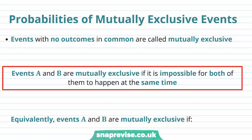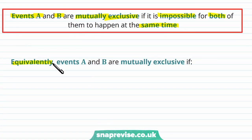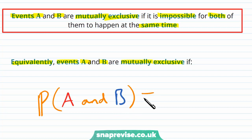So how can we calculate the probabilities of Mutually Exclusive Events? Events with no outcomes in common are called Mutually Exclusive. Events A and B are Mutually Exclusive if it is impossible for both of them to occur at the same time. Equivalently, Events A and B are Mutually Exclusive if the probability of Event A and Event B occurring is precisely zero.